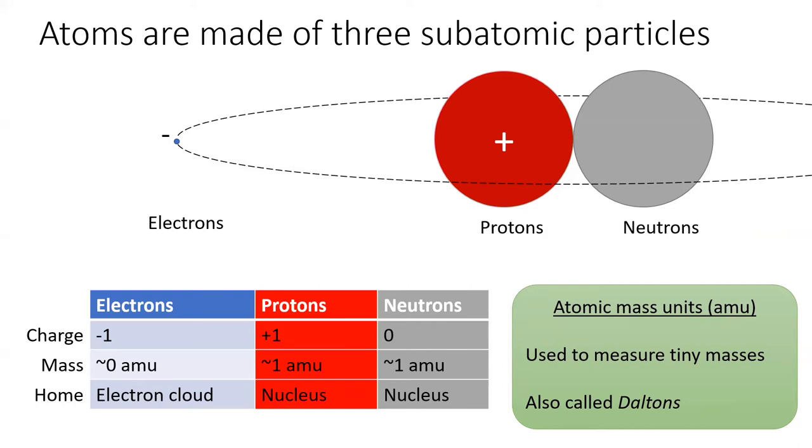Electrons have mass, but it's so small that you can safely ignore it in this course. Protons and neutrons both have a mass of one atomic mass unit, or AMU. Sometimes AMUs are called Daltons, out of respect for our boy John Dee.